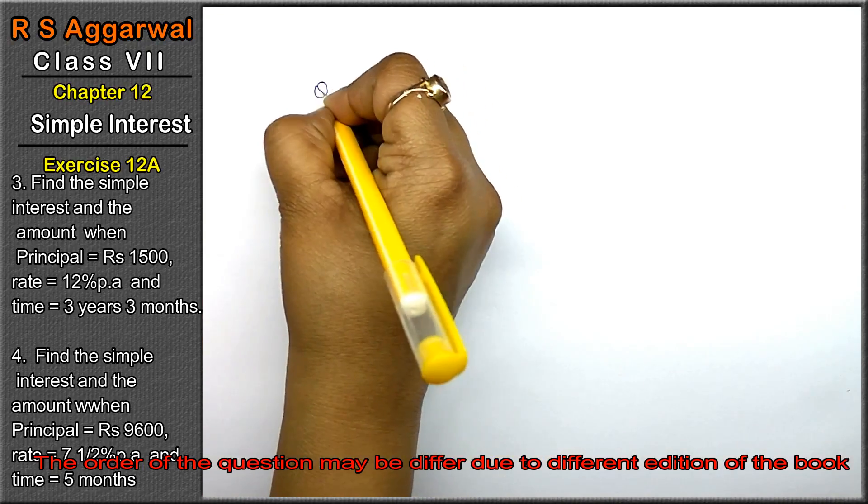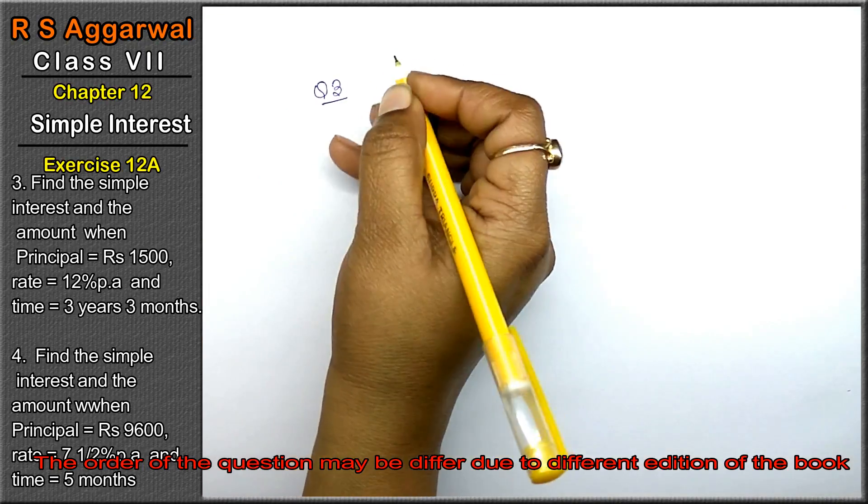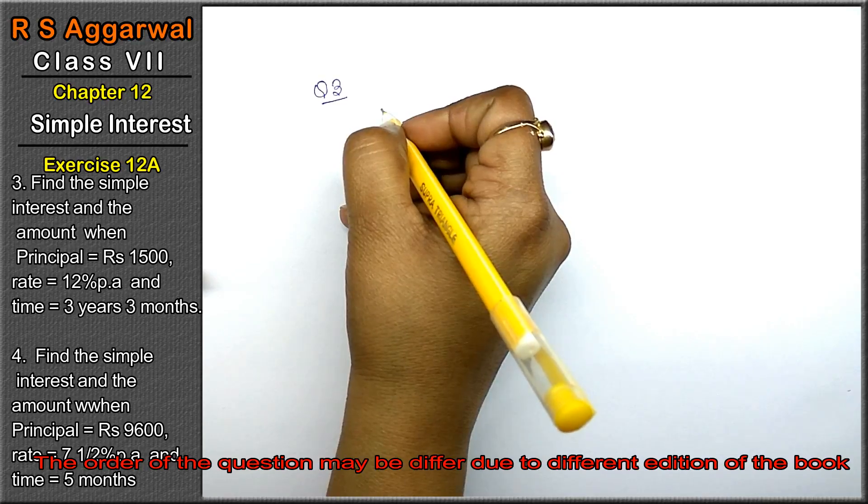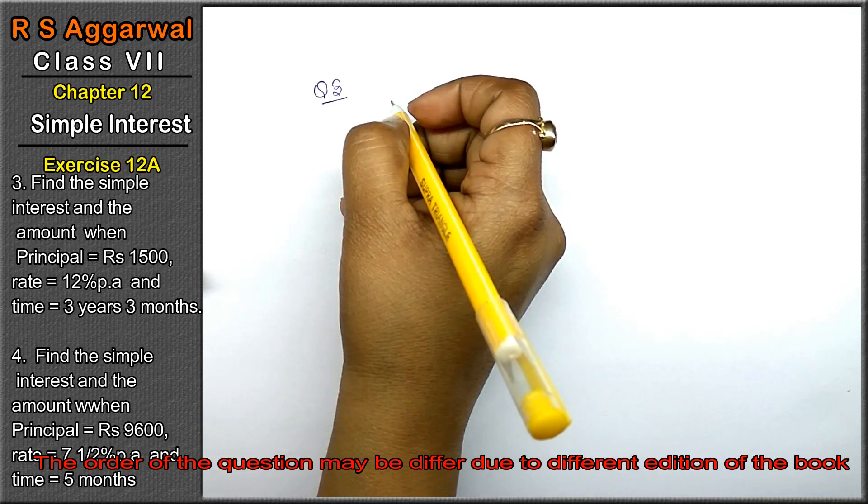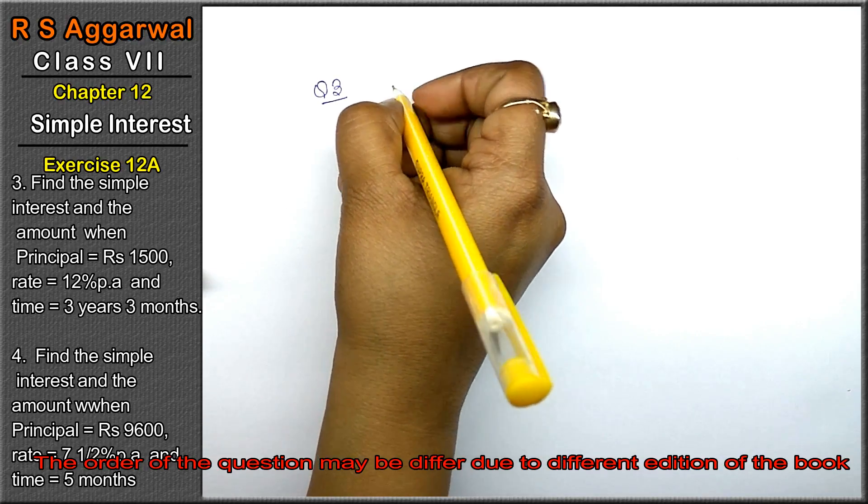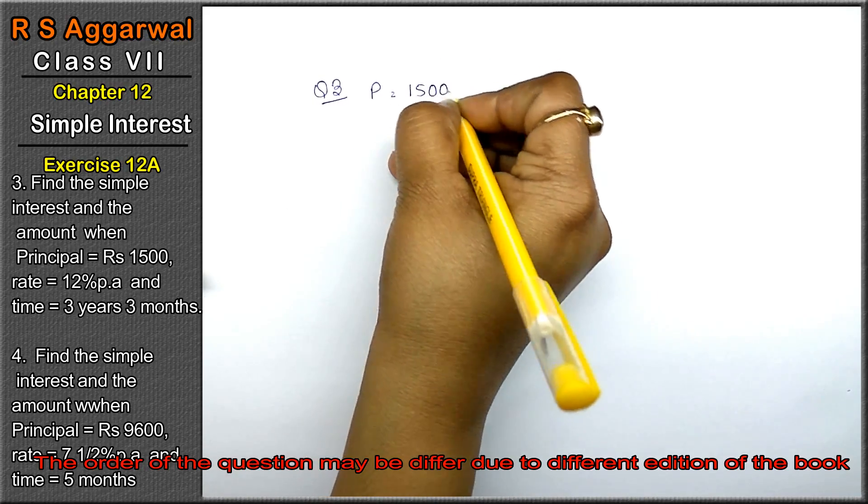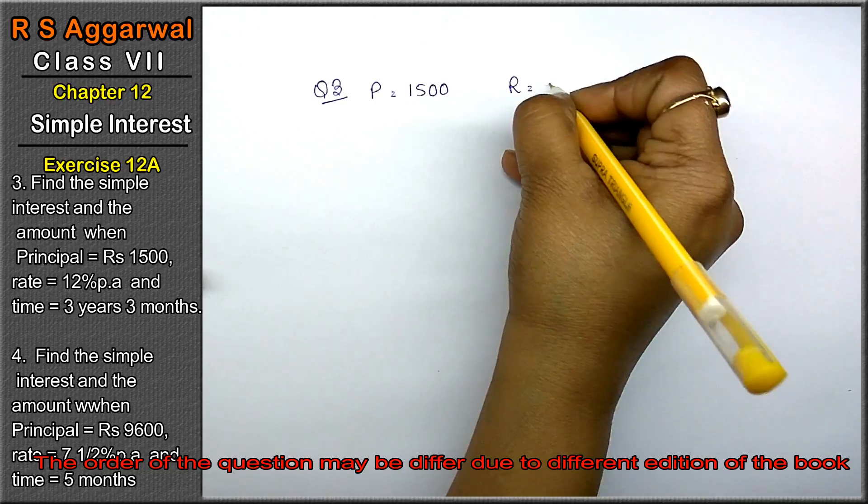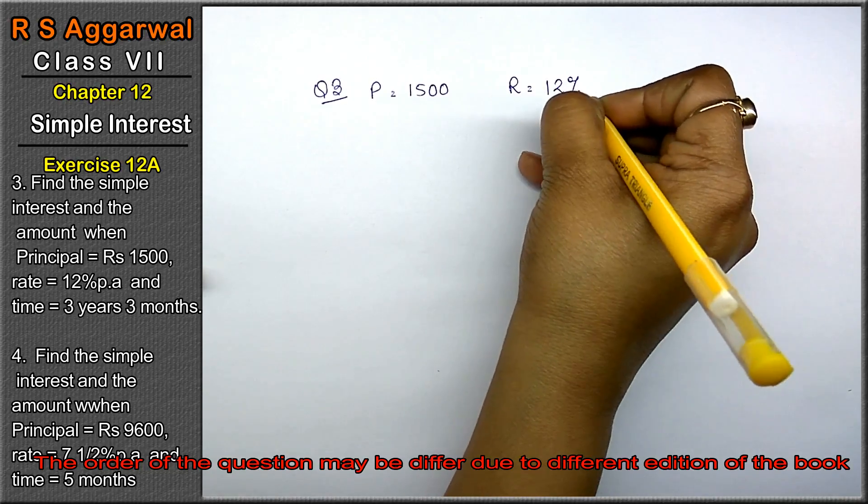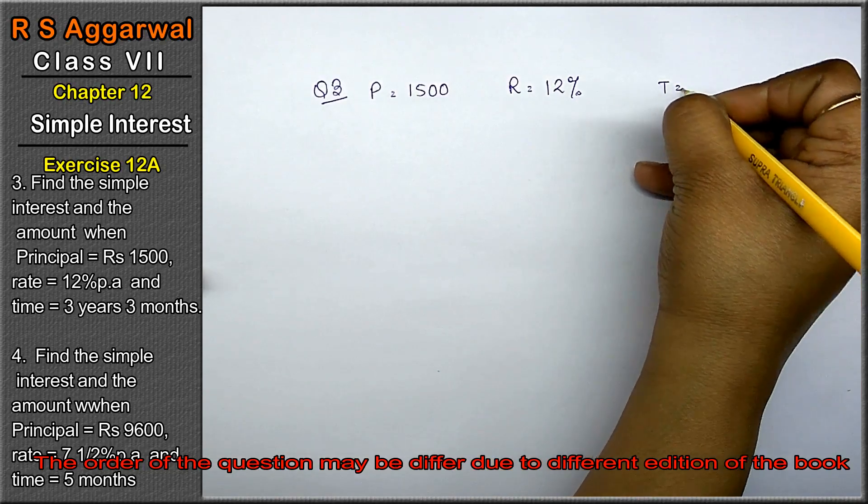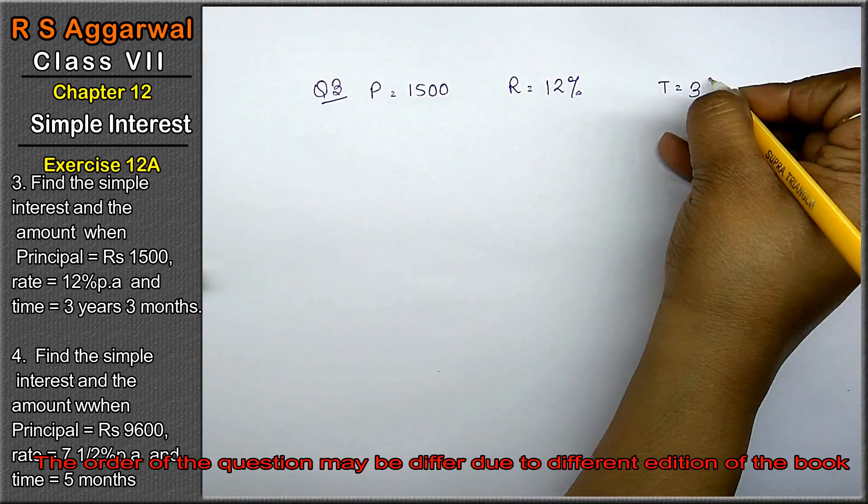Let's do question number 3rd. Find the simple interest and the amount when principal equals 1500, rate equals 12% per annum, and time equals 3 years 3 months.